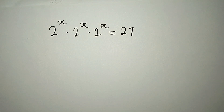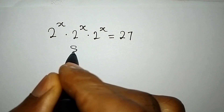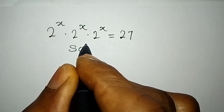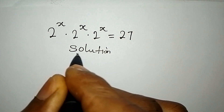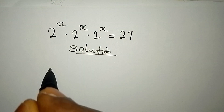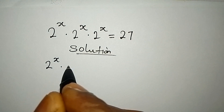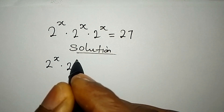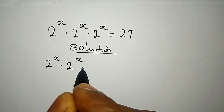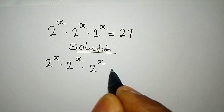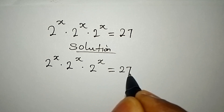Hello everyone. Let's provide the solution to this problem: 2 to the power of x, multiplied by 2 to the power of x, multiplied by 2 to the power of x, equals 27.